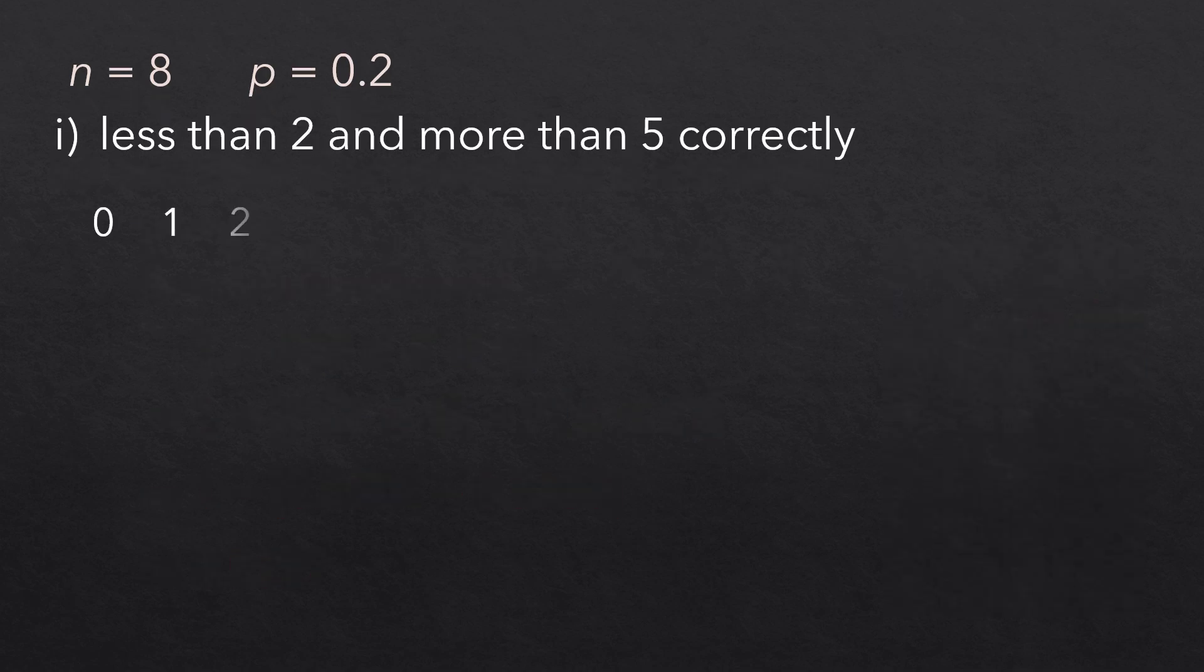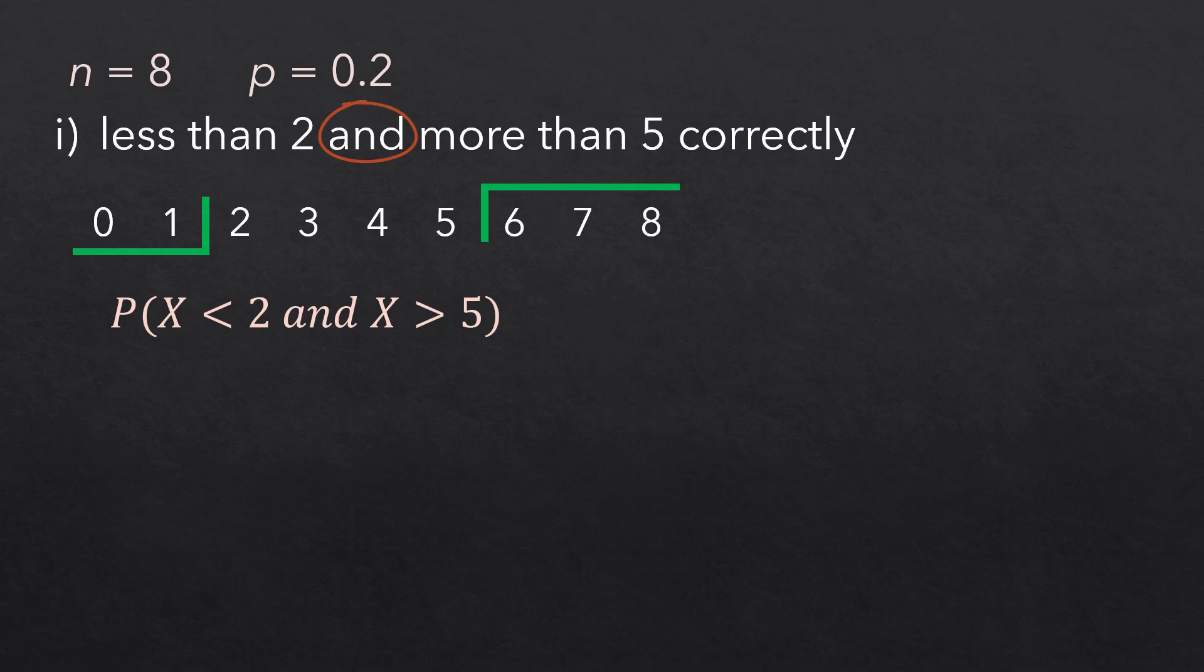Finally, we want the probability that x is less than 2 and more than 5. The word AND requires both conditions to be satisfied at the same time. Since there is no value that is both less than 2 and greater than 5, the probability here is 0.